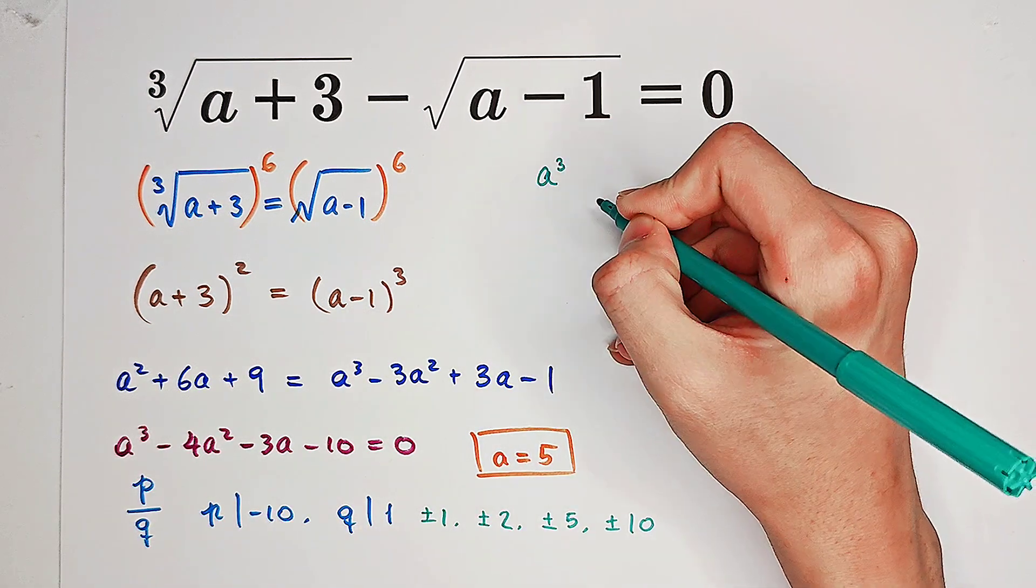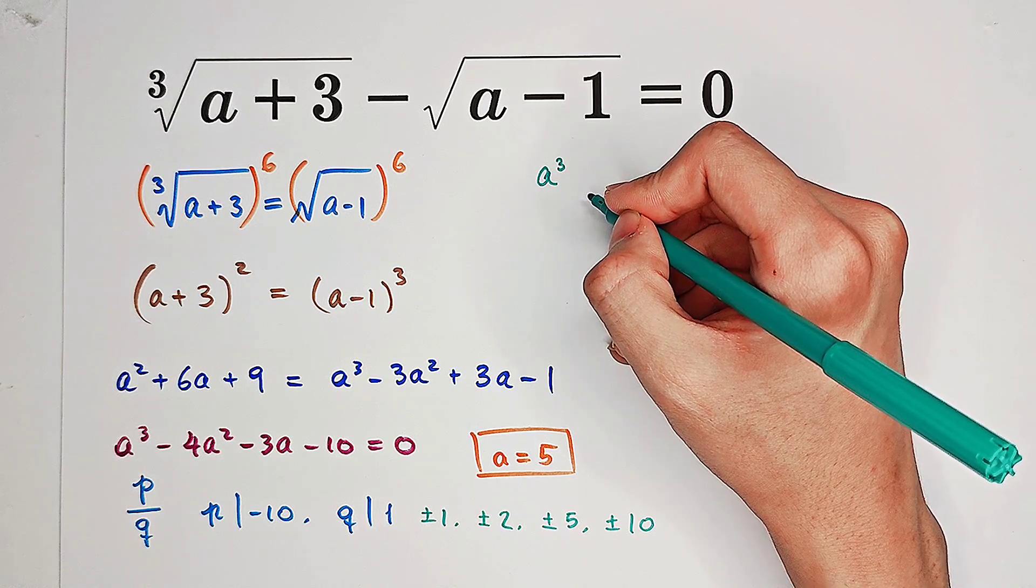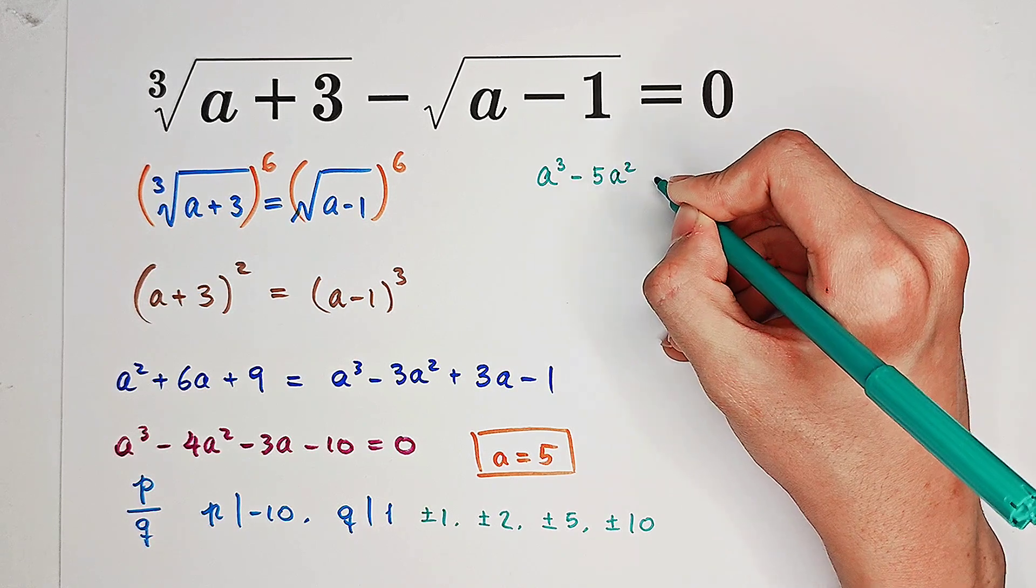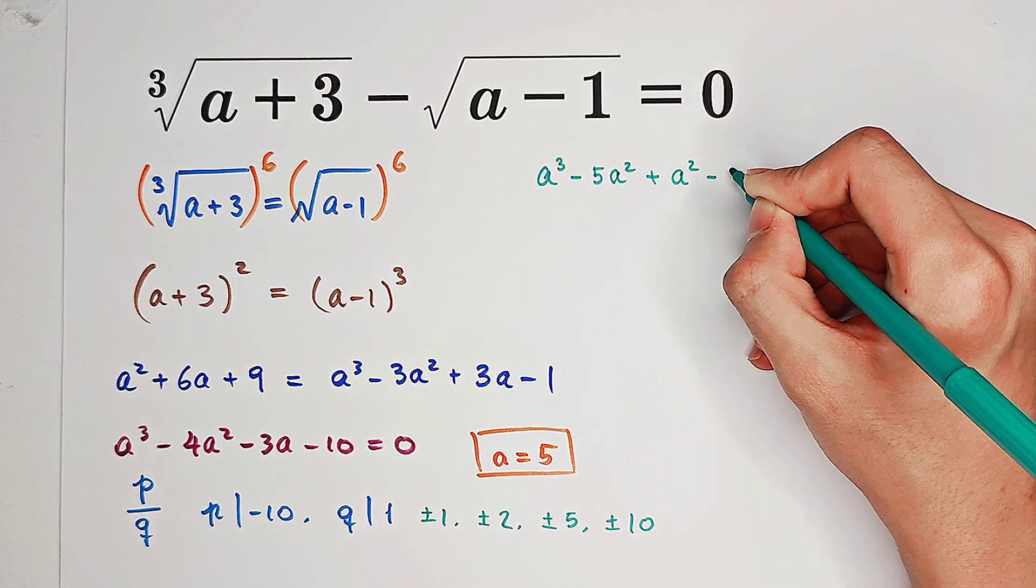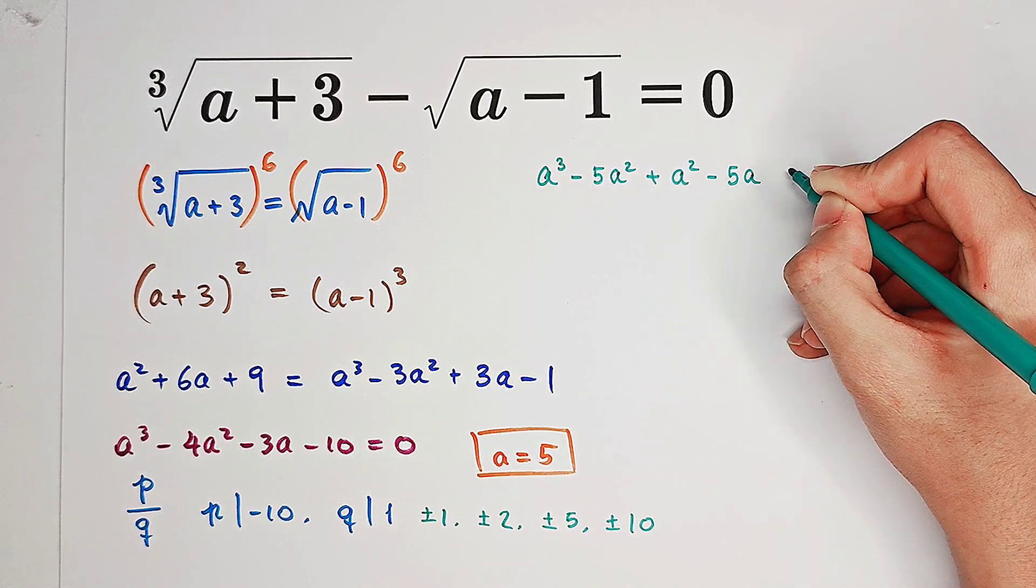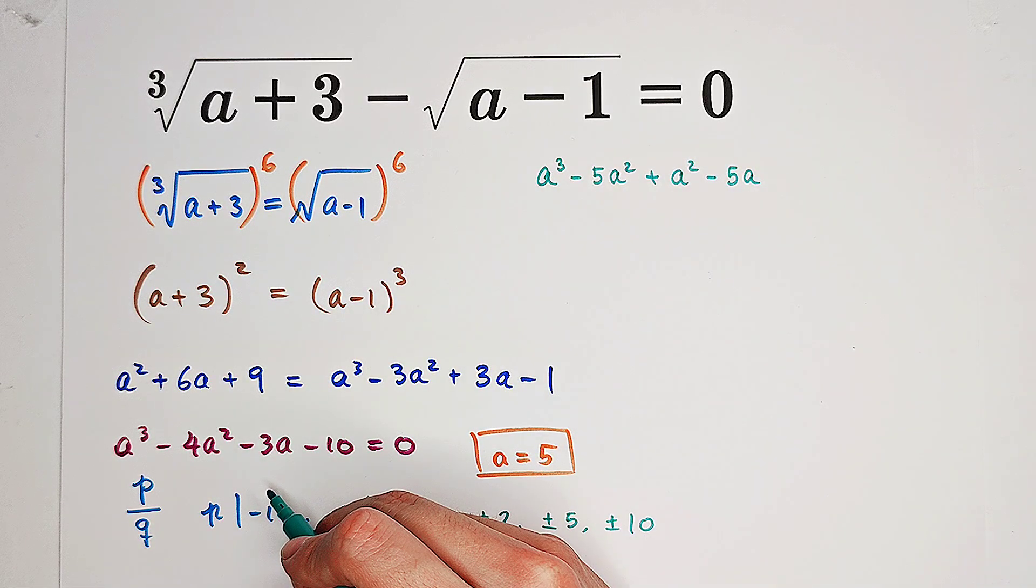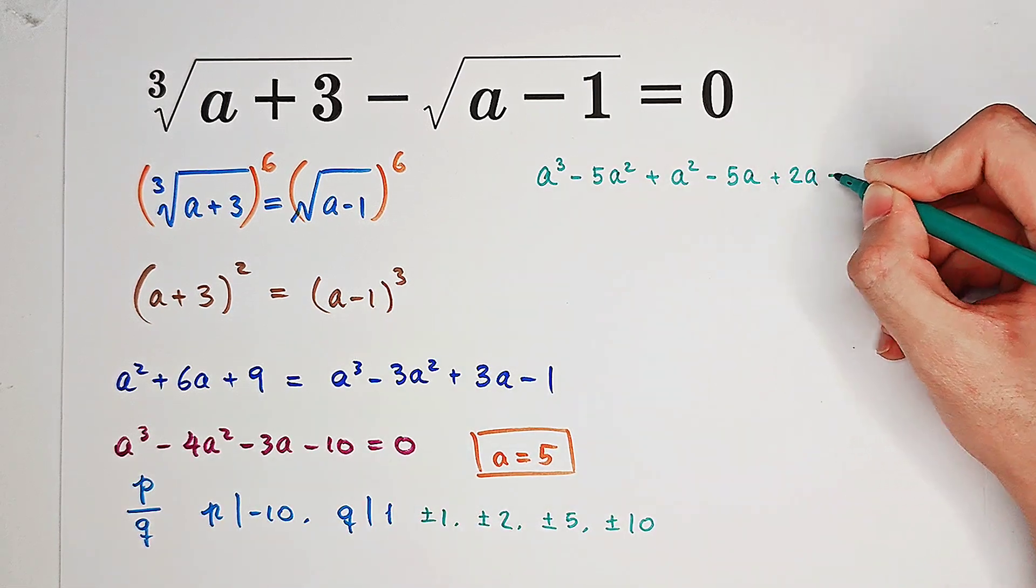Look, I will write a cubed minus 4 times a squared as a cubed minus 5 times a squared. Then I will add an a squared, then subtract 5a from it. Because we have negative 3a, you know this equation, so we have to add 2a. And now you can see we have negative 10.